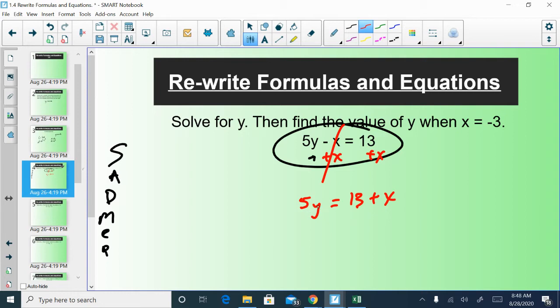Subtract x and add x are going to cancel. And we have 5y is equal to 13 plus x. I would like to combine those if I could. But they're not what we call like terms. So that is as simplified as I can make it. Except y is not yet solved for. Y is not by itself. It has a multiply by 5 happening to it. We should all know how to undo a multiply by 5. And that would be to divide by 5. If you divide by 5 on one side, you have to divide everything by 5. Now multiply by 5 and divide by 5 cancel.